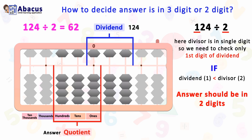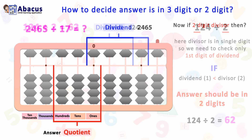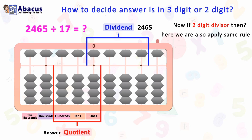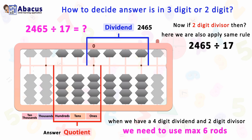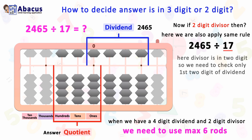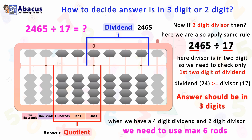Now with a two-digit divisor, we apply the same rule as with a one-digit divisor. When we have a four-digit dividend and two-digit divisor, we need to use a maximum of six rods. For 2465 divided by 17, the divisor is two digits, so we check the first two digits of the dividend. Dividend's first two digits are 24, which is greater than divisor 17, so our answer should come in three digits.